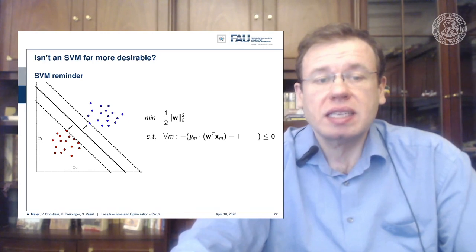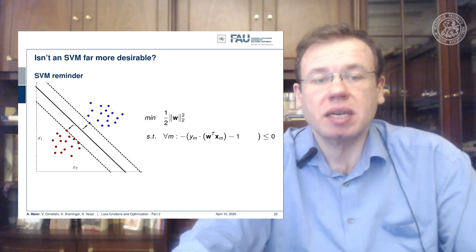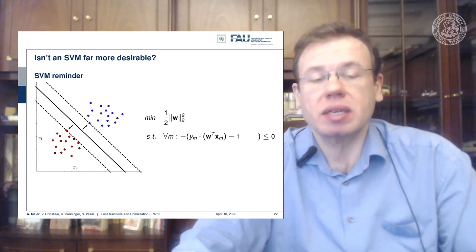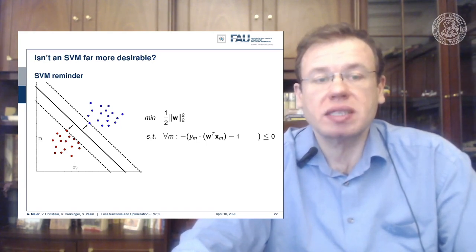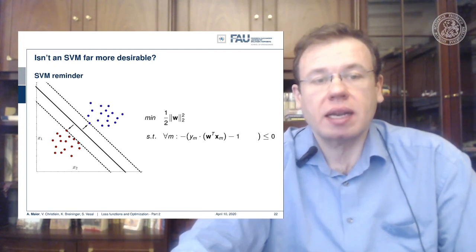SVM then computes the optimally separating hyperplane, so it's also computing some plane that separates two classes, and the idea is that it wants to maximize the margin between the two sets. So you try to find the plane, or here in the simple example this line, that produces the maximum margin, and the margin here is indicated by the dashed lines. So the SVM tries to find the margin that is maximally large while separating those classes.